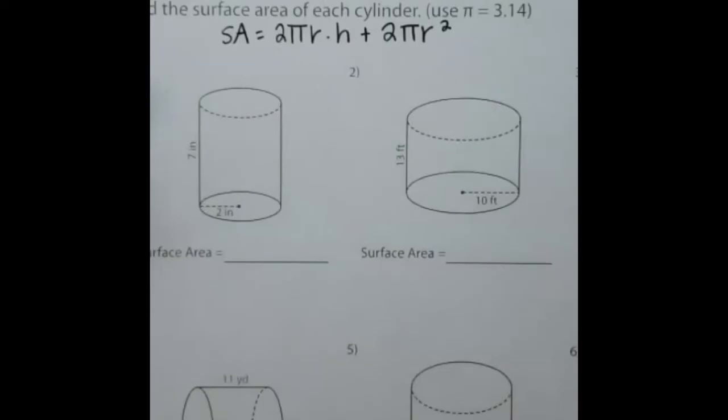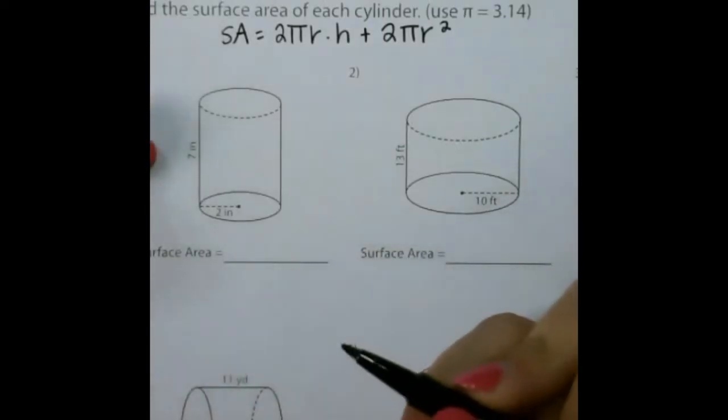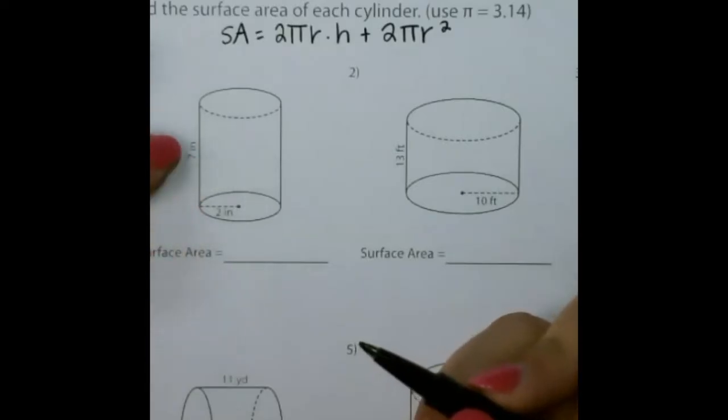Let's look at a couple of examples. Again, here is our formula. So for this shape, the radius is 2 and the height is 7.